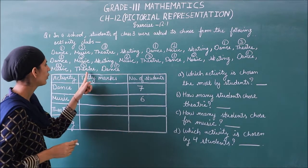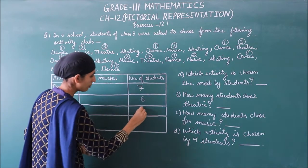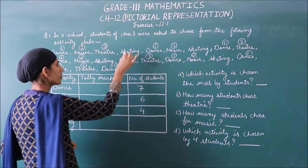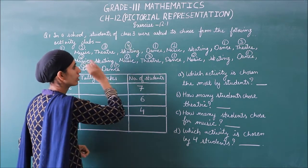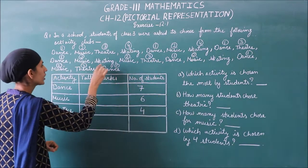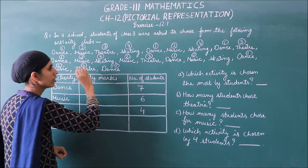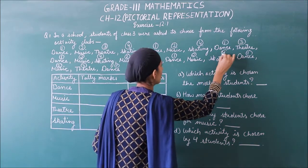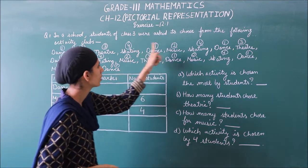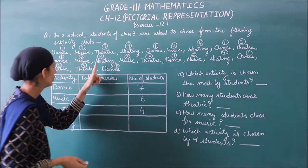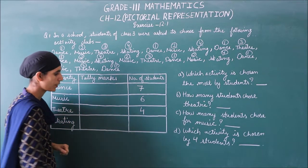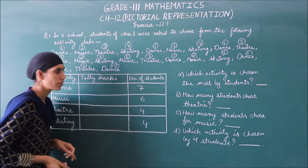...and four. So theater has four students. Last is skating — skating is also four: one, two, three, and four. So skating also has four students.